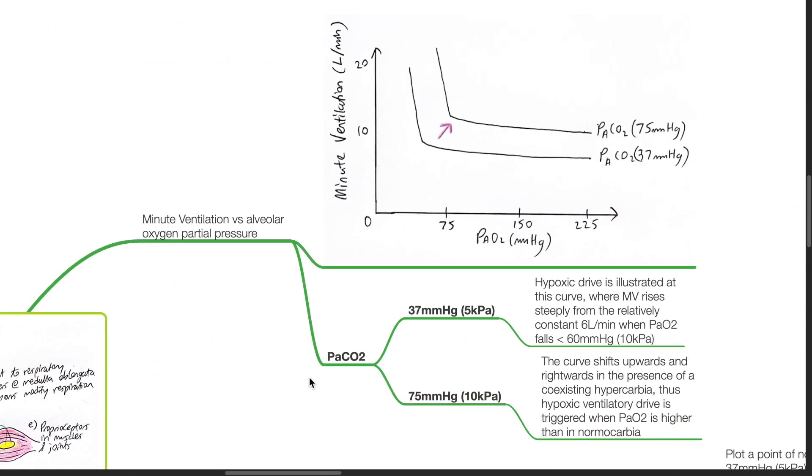This is a graph of minute ventilation versus alveolar oxygen partial pressure. The y-axis shows minute ventilation in liters per minute. The x-axis shows PaO2 in millimeters mercury.